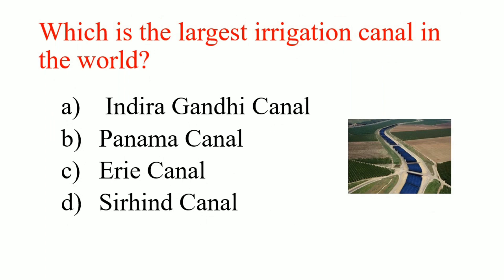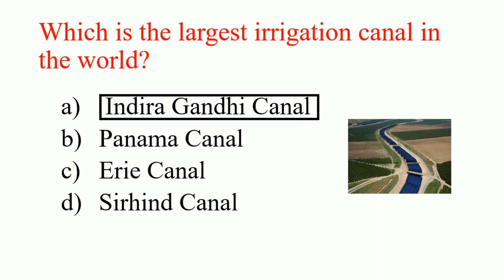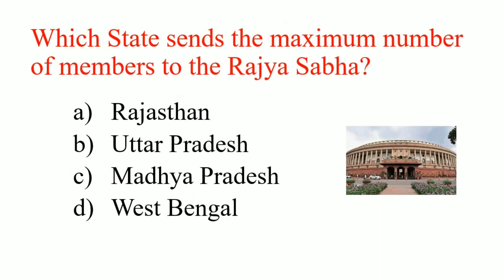Which is the largest irrigation canal in the world? Answer: Indira Gandhi Canal. Which state sends the maximum number of members to the Rajya Sabha? Answer: Uttar Pradesh.